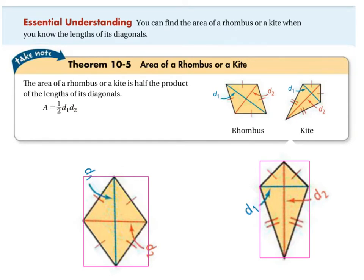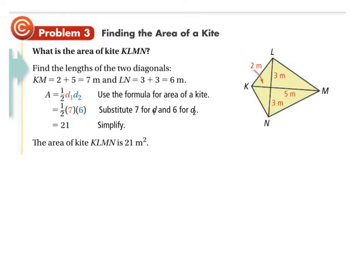So here's the problem — what is the area of kite KLMN? They've given you measurements: this is 2, this is 3, this is 3, this is 5. So what are the diagonals? KM is just 2 plus 5 or 7 meters, and LN is just 3 plus 3 or 6 meters. You just plug that in: one half of 7 times 6, which is 42, is 21. So the area is 21 square meters.